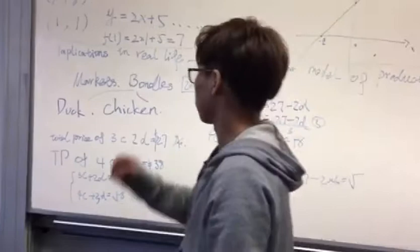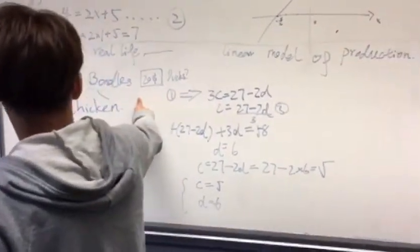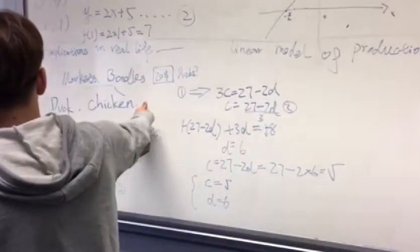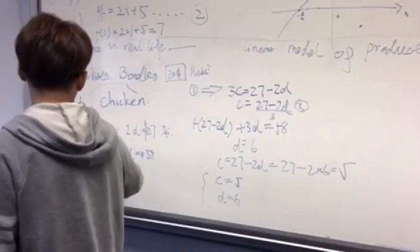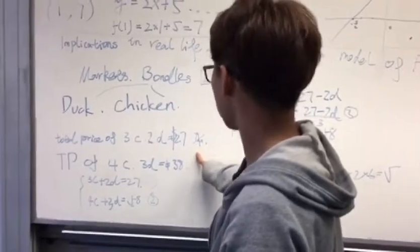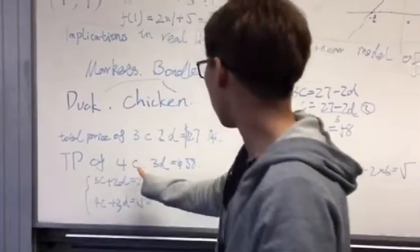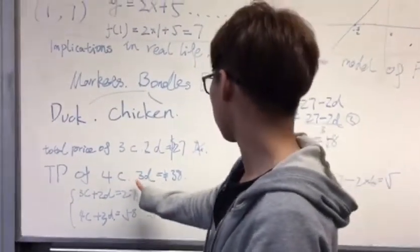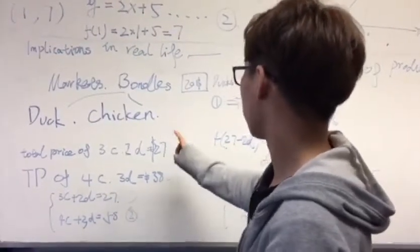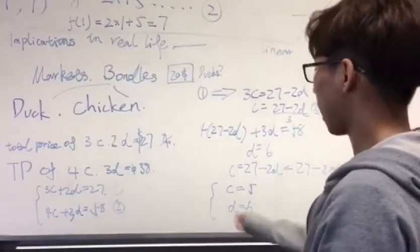In the meat market, there are two kinds of bundles. I'm trying to purchase ducks and chickens. The first bundle is 3 chickens and 2 ducks for a total price of $27. The second bundle is 4 chickens and 3 ducks for a total price of $38. Just ignore the tax and other aspects.